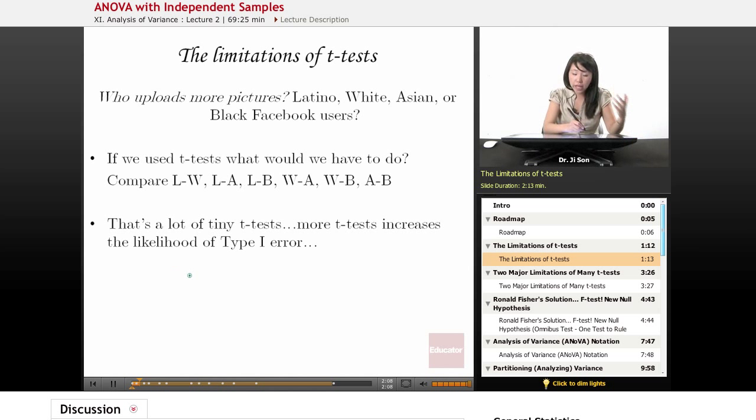Previously, to calculate type 1 error, we looked at 1 minus the probability that you would be correct. So 1 minus the probability of being right. And that was something like 0.05, let's say, right?